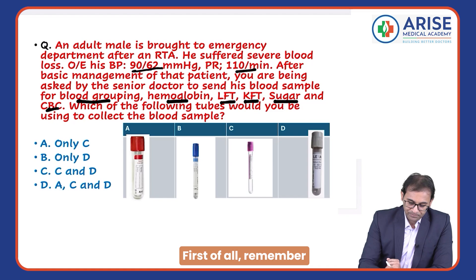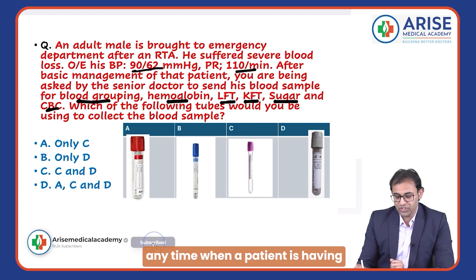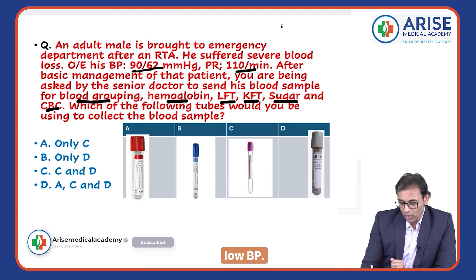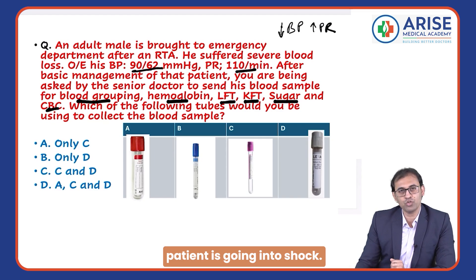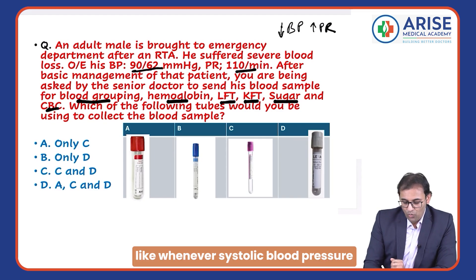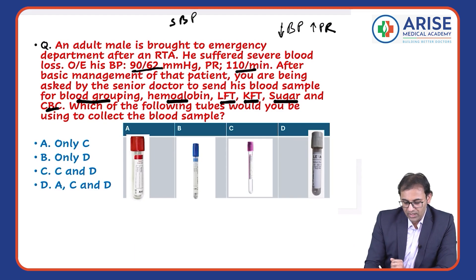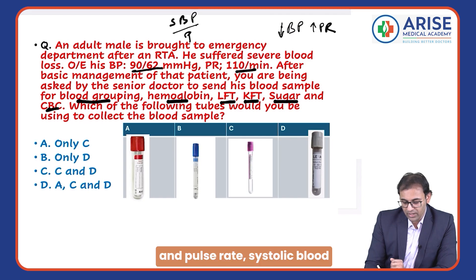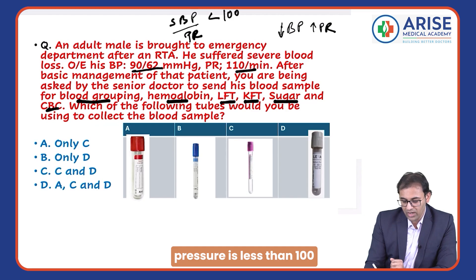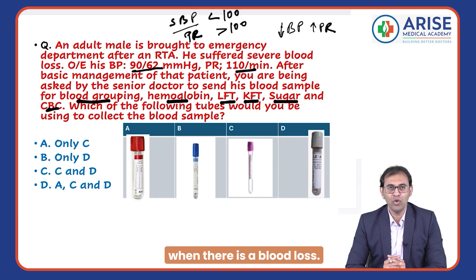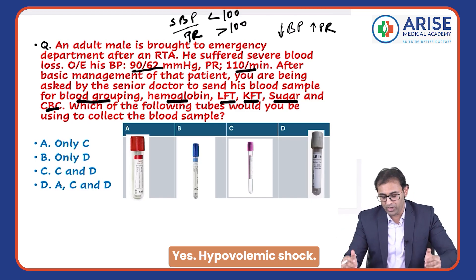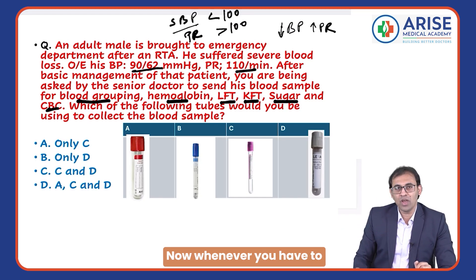Remember, whenever a patient has low BP and high pulse rate, they are going into shock. Specifically, when systolic blood pressure is less than 100 and pulse rate is more than 100, you can understand the patient is going into hypovolemic shock due to blood loss.